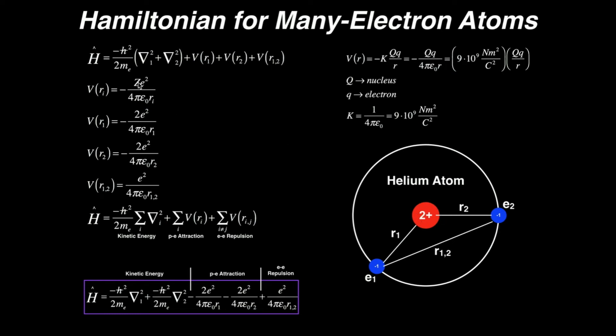If we're dealing with lithium, z would be a three. If we were dealing with carbon, z would be a six. So z is just your atomic charge. What is the nuclear charge of that atom?